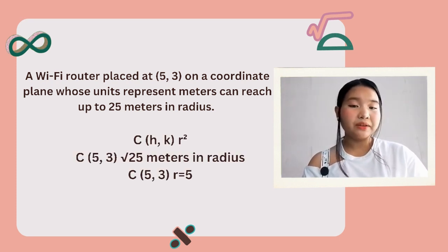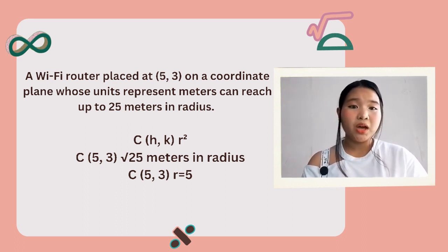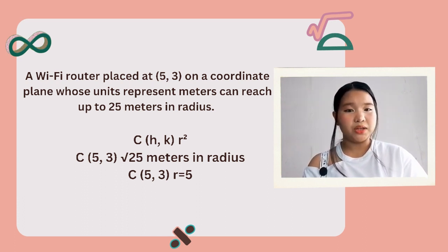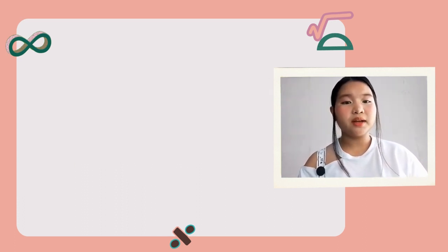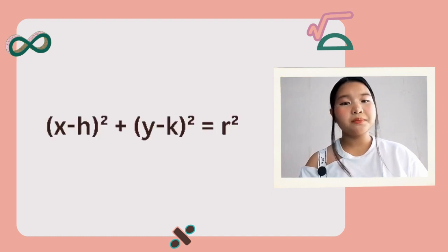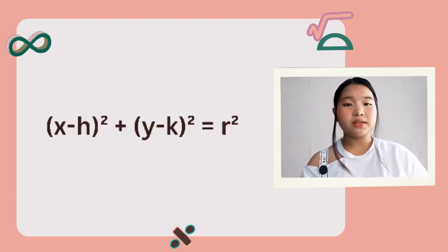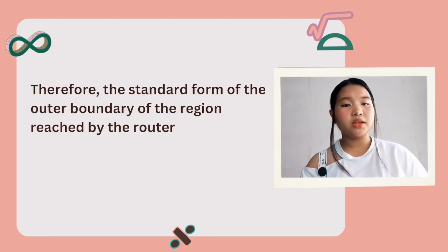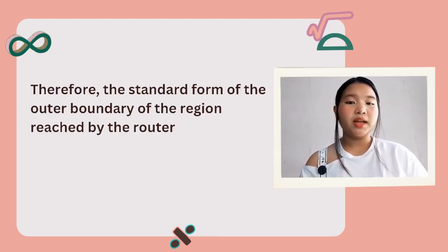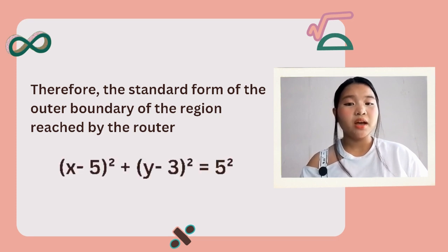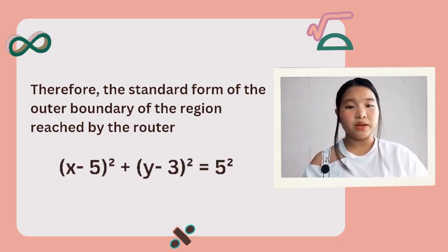Given that our radius is 25 meters, now that we have obtained h and k — the center and the radius — let's go back to our equation. The standard form is x minus h squared plus y minus k squared equals r squared. So the equation in standard form of the outer boundary the router can reach is: x minus 5 squared plus y minus 3 squared equals 25 squared.